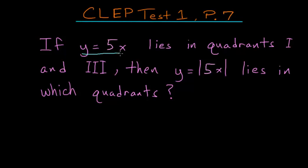If y equals 5x lies in quadrants 1 and 3, then y equals the absolute value of 5x lies in which quadrants? So to answer a question like this,